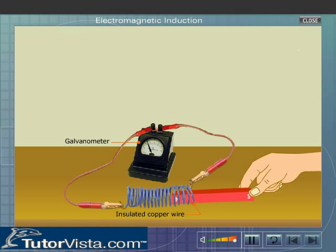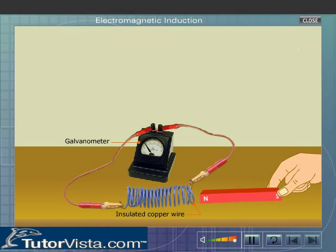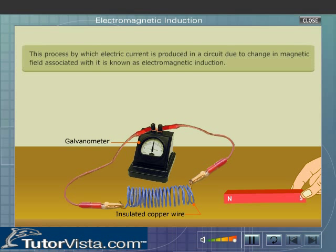This is because the current is flowing in the opposite direction. From this experiment we can conclude that a current is produced in a circuit whenever there is a change in magnetic field associated with it. This process by which electric current is produced in a circuit due to change in magnetic field associated with it is known as electromagnetic induction.